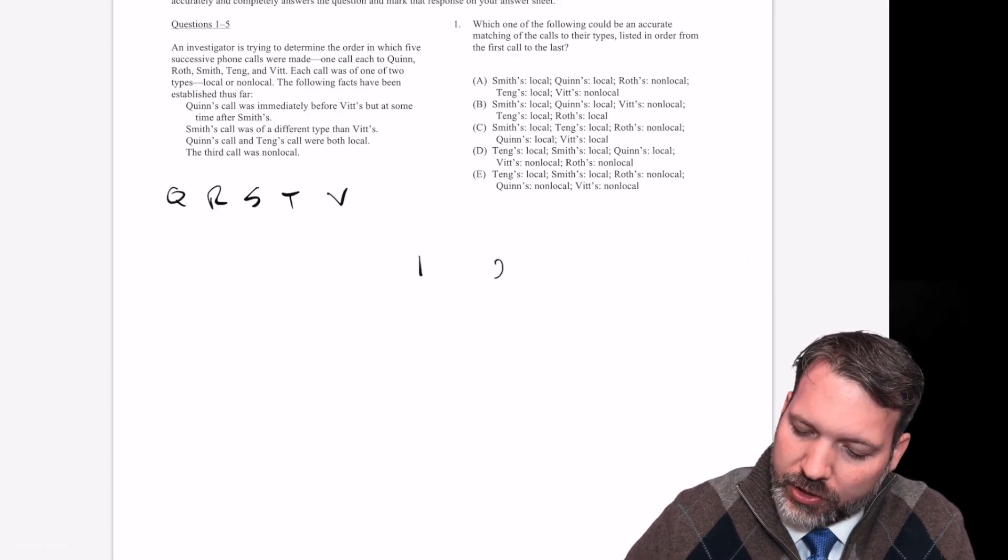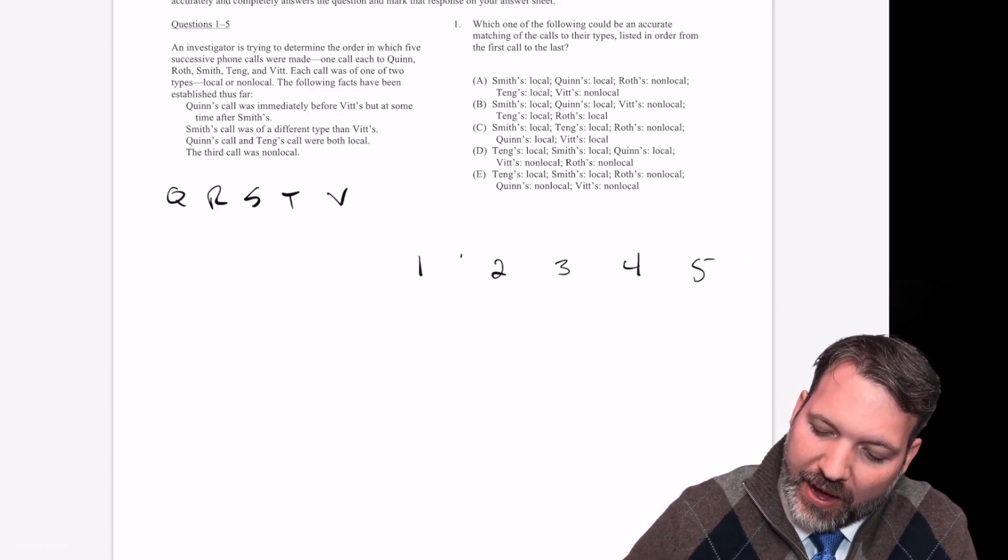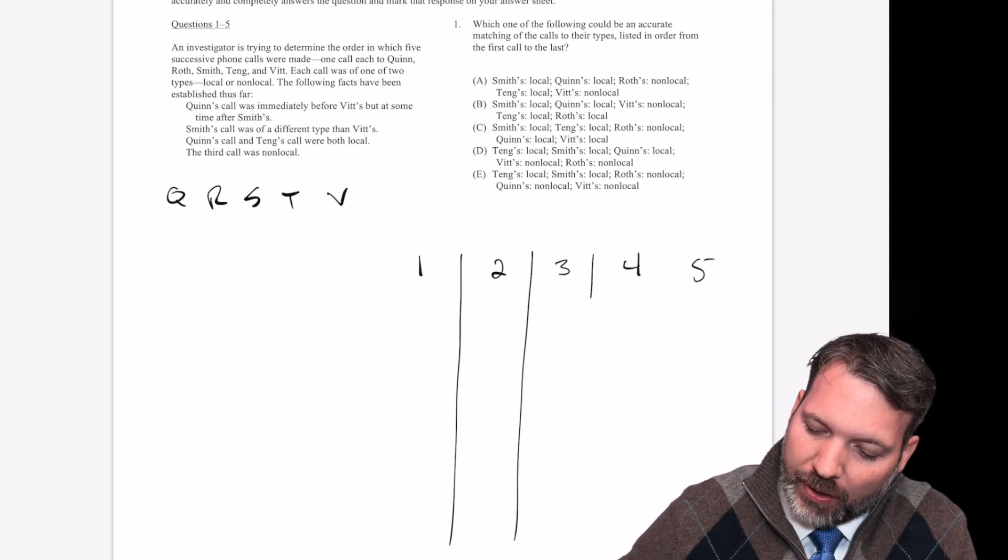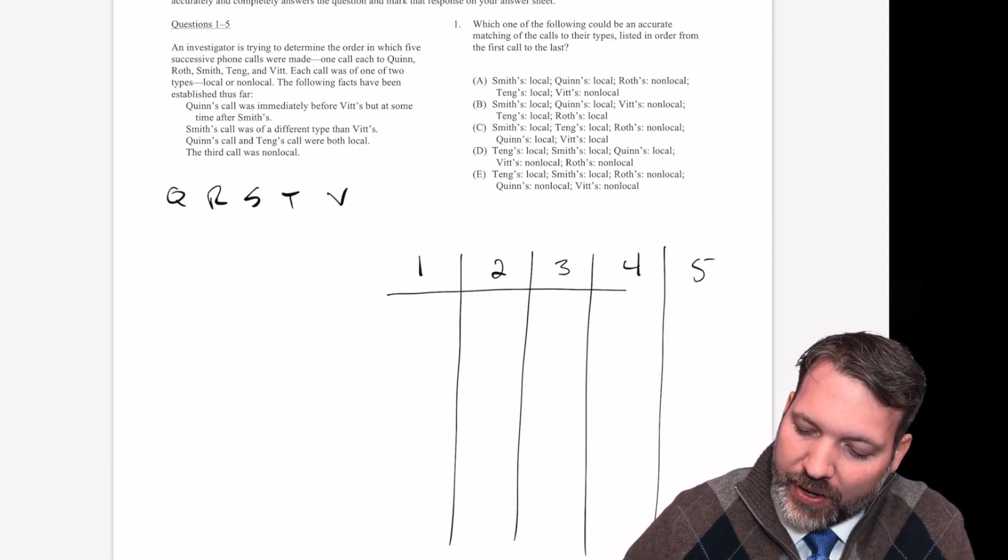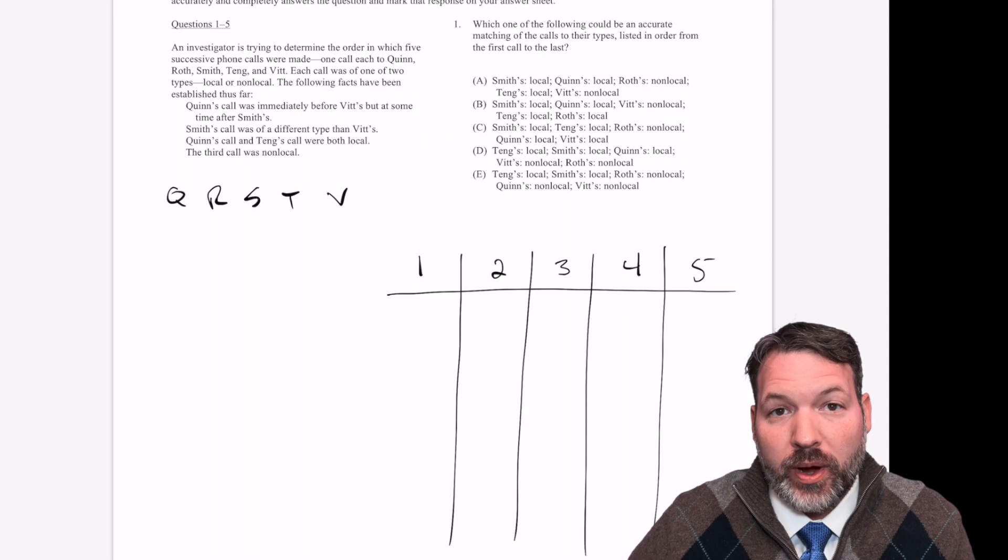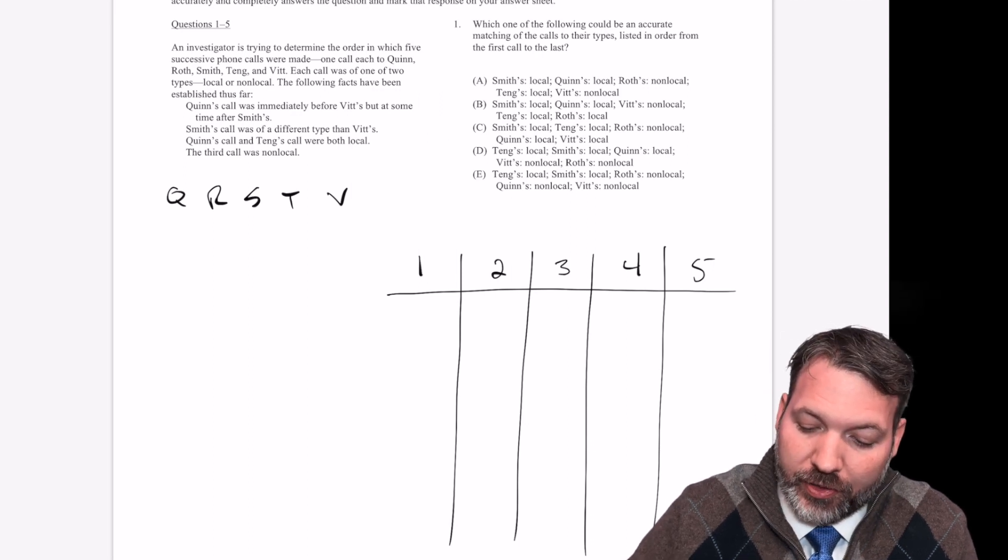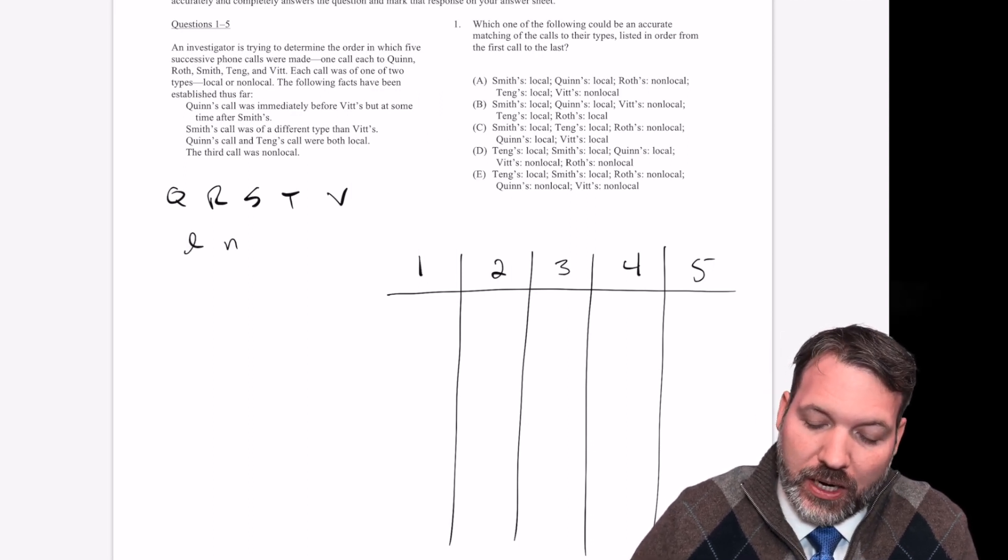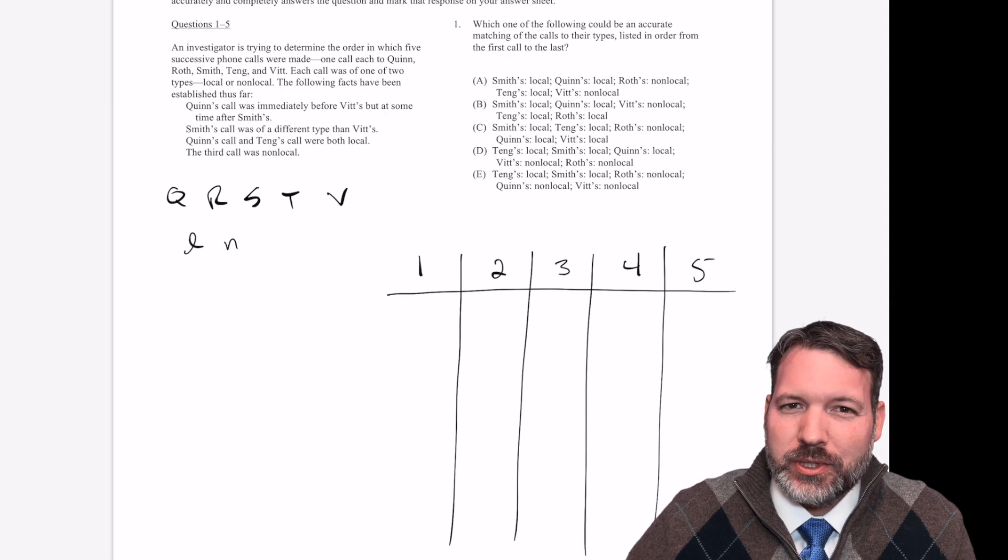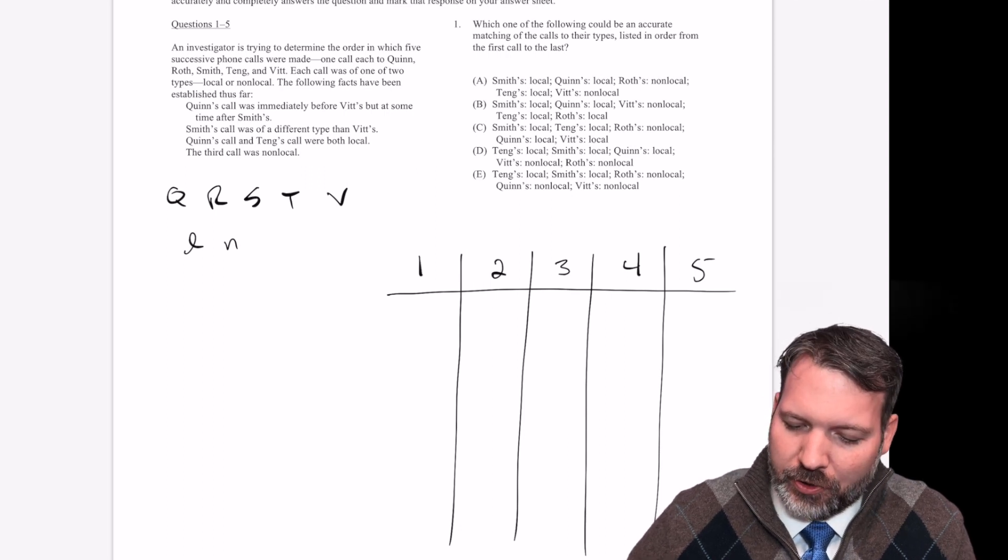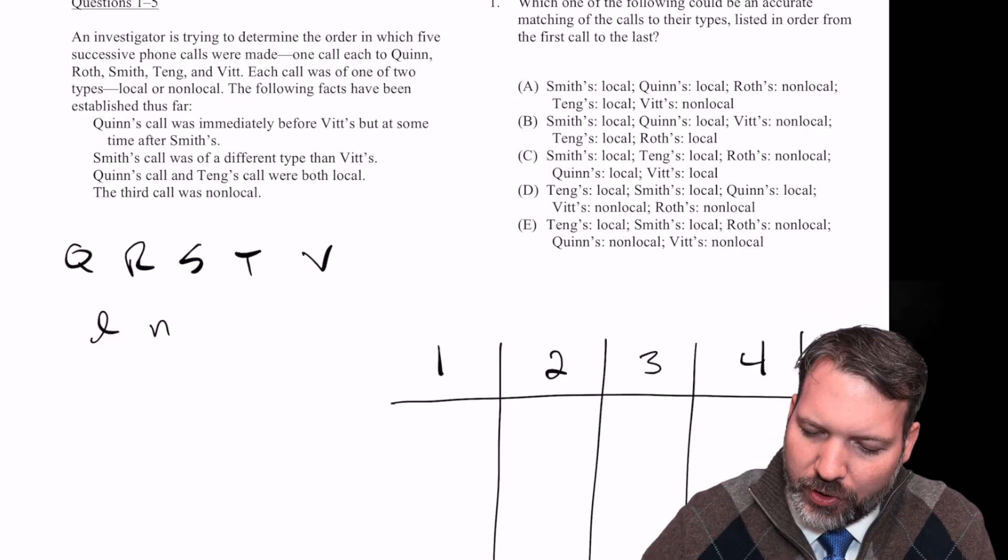I'm going to set this up as one, two, three, four, five. So this is a one-to-one order game in that sense. I just want to keep in mind that as I figure out what goes where, I also need to figure out are they local or are they non-local. So I think I'm probably just going to use a subscript as I go to try and figure out what's what. Maybe the clues will better reveal what we're supposed to do. So let's go ahead and jump into the clues.